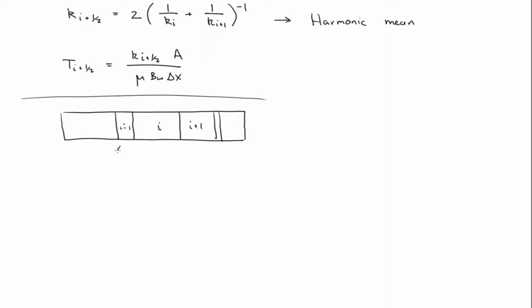And so now you have delta x of the i minus 1, delta x of the i, delta x of the i plus 1. Likewise, each of these have their own permeabilities.